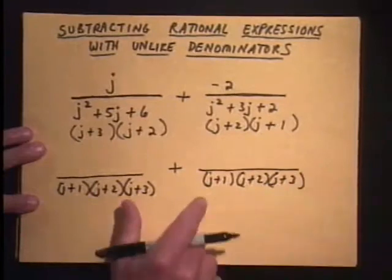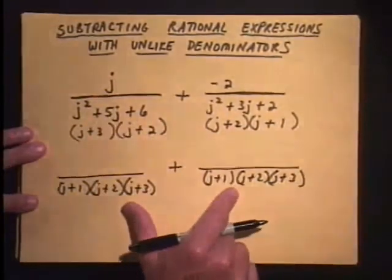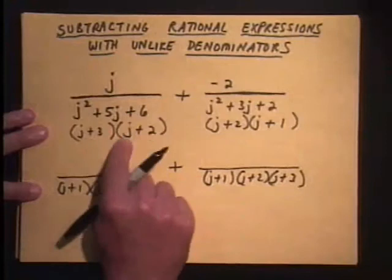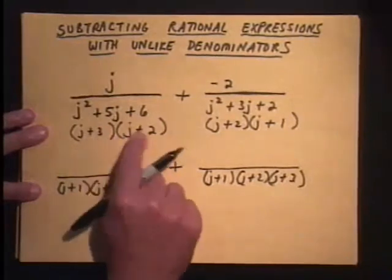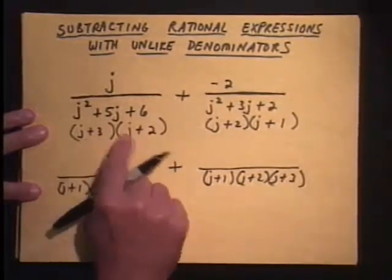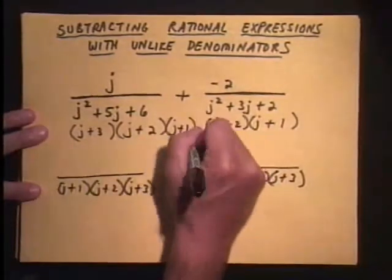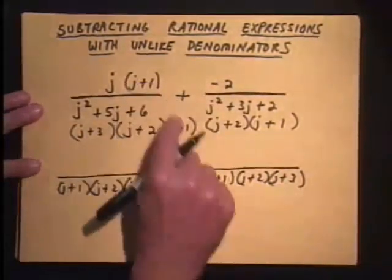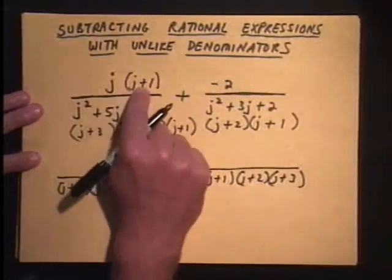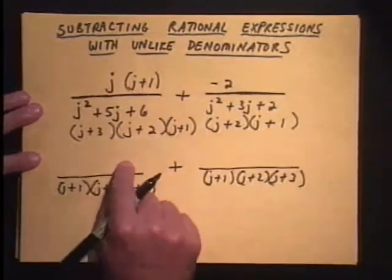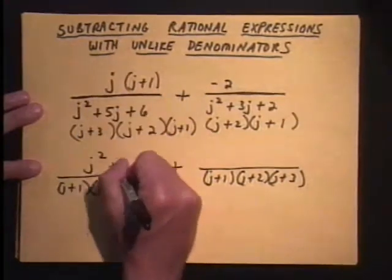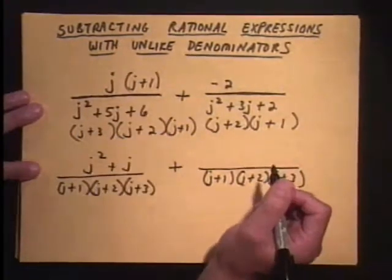Now we need to make equal fractions out of what we started with with this common denominator, step 2. Once you get everything in order here, you can look at this one and say, which one is this missing to become the one with the common denominator? It's missing the j plus 1. So we'll multiply both top and bottom by j plus 1. Remember, whatever you do to the bottom, you must do to the top. So when I multiply the j through, distributing: j times j is j squared, j times 1 is plus j.